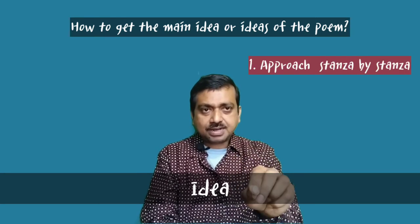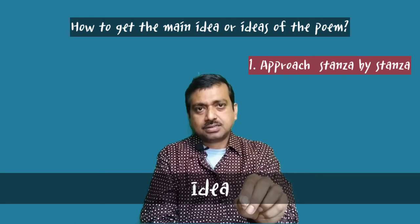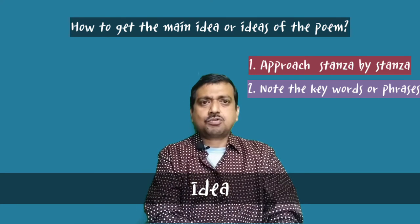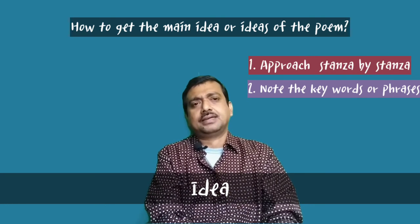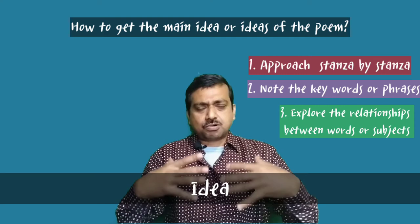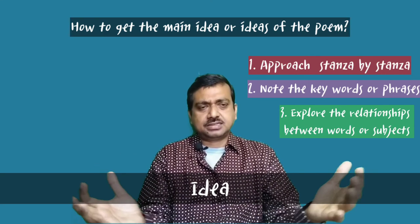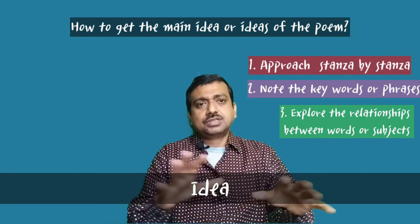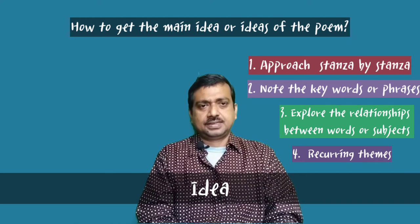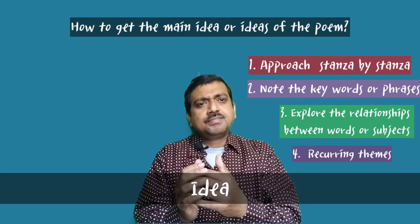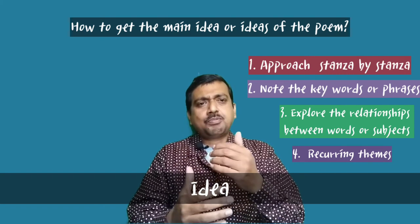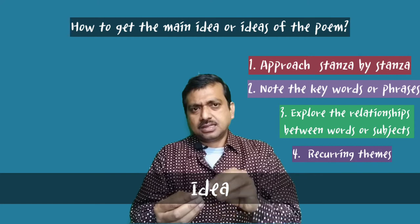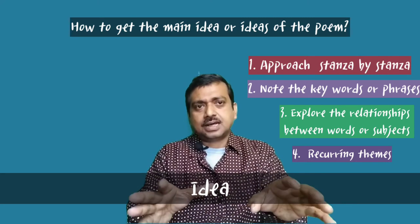Approach the poem stanza by stanza, line by line, word by word. Note the key words and phrases repeated throughout the poem. Think about why the stanzas and lines are structured in a particular way. Explore the relationships mentioned between different things, even between the reader and the poet, and search for them throughout the poem. If there are any recurring themes, and if the poet is trying to say something about the same thing again and again, just note them down — these are the main ideas.